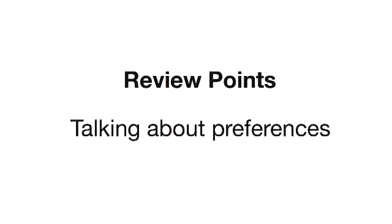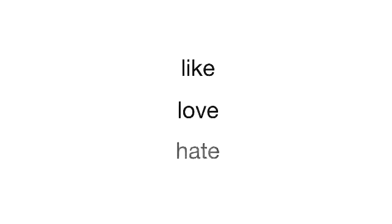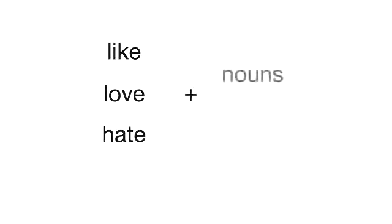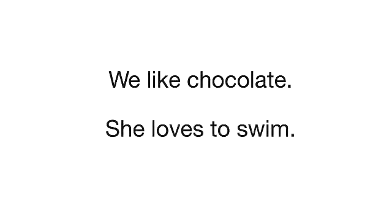So today's review points are talking about preferences using like, love and hate. Now you know that like, love and hate can be followed by nouns or verbs. We like chocolate. She loves to swim. Well done. See you again soon. Bye.